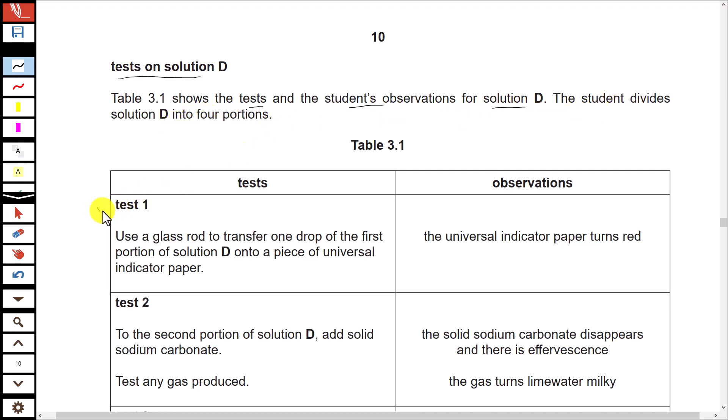Test 1: Use a glass rod to transfer one drop of the first portion of solution D onto a piece of universal indicator paper. The universal indicator paper turns red; it shows this solution is acidic and it has hydrogen ions present.